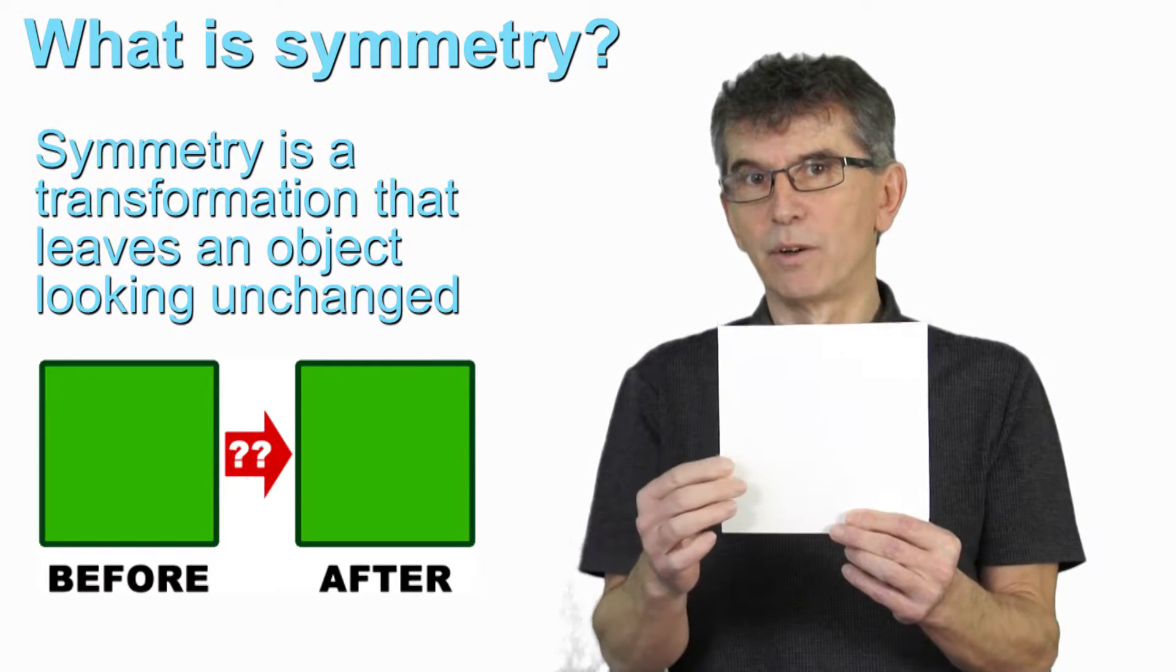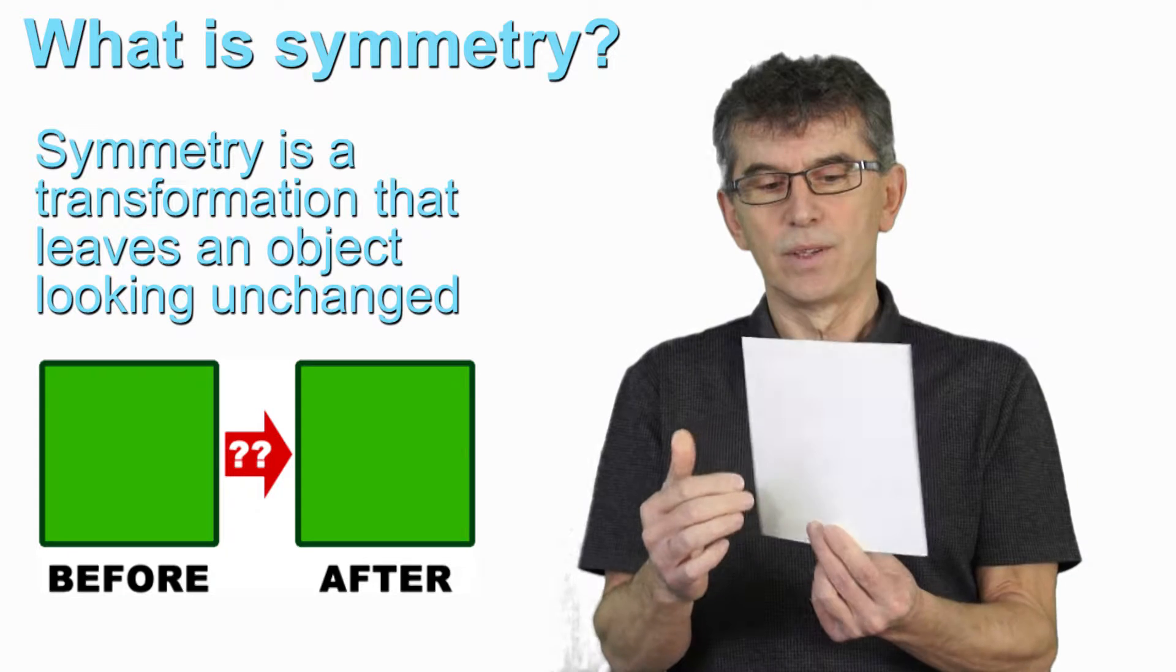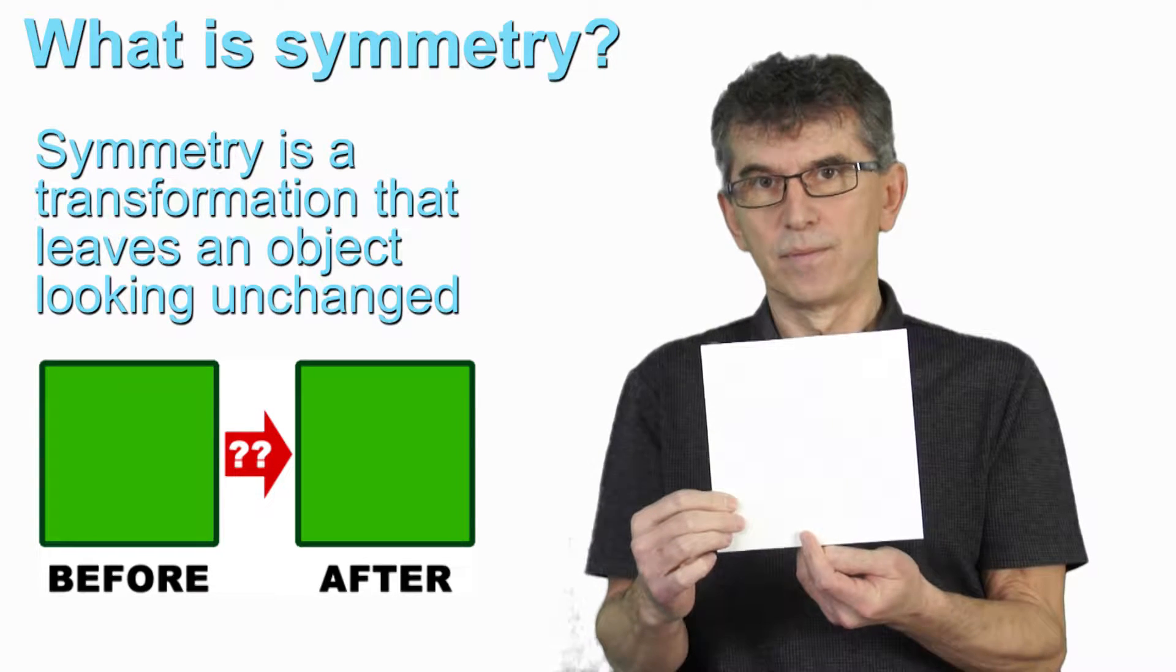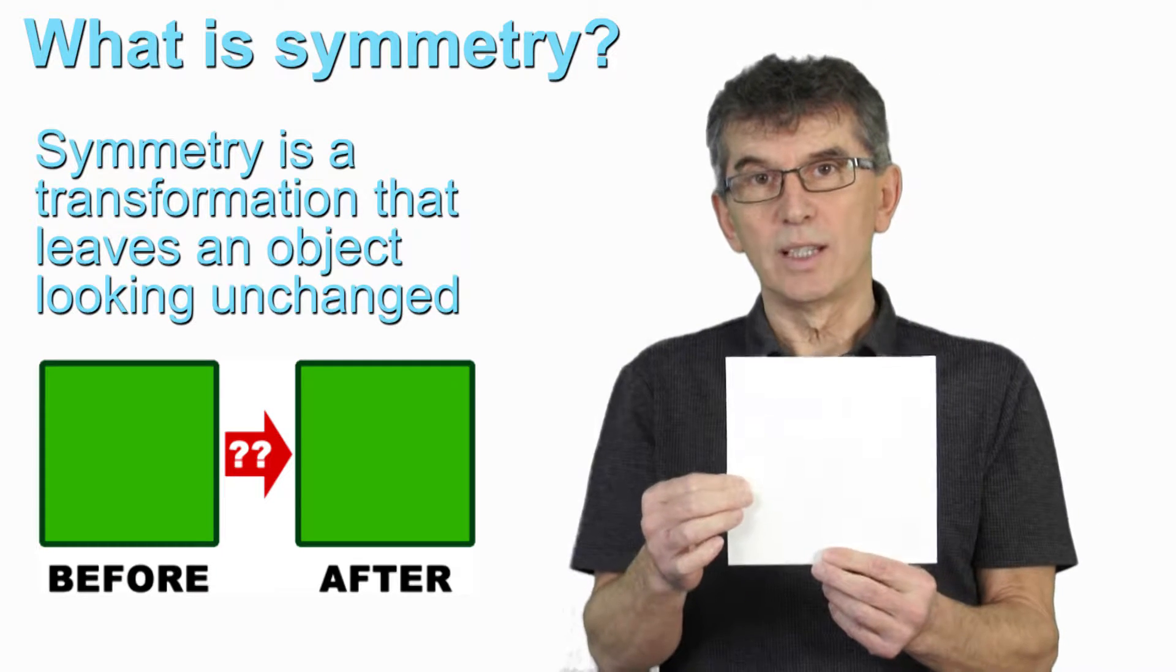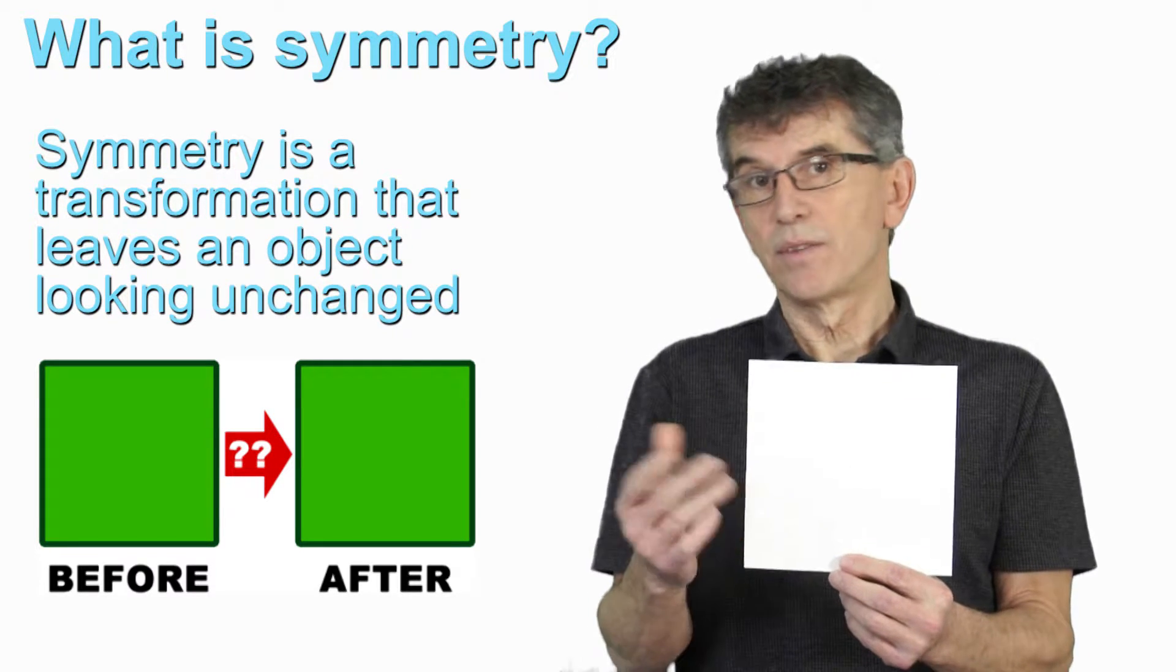I could also flip it or reflect it. I could do this to it. So, all those things that I can do that leave the square looking unchanged are the symmetries of the square.